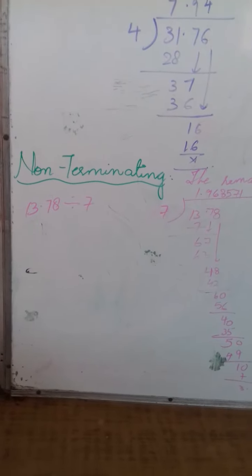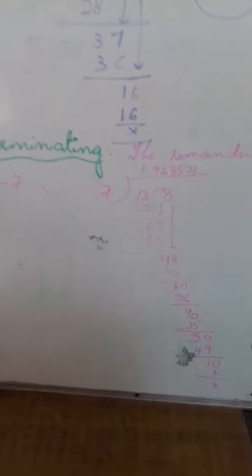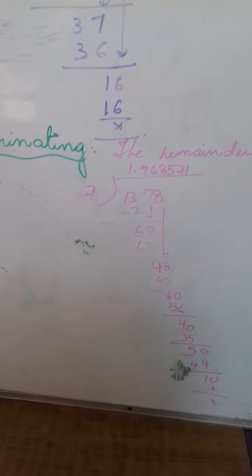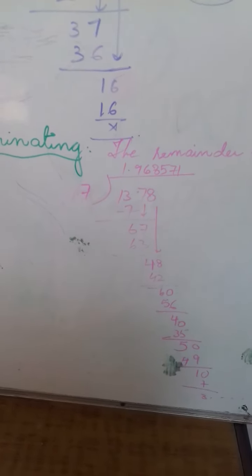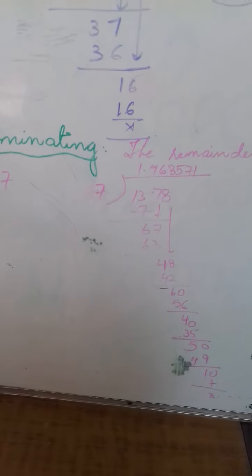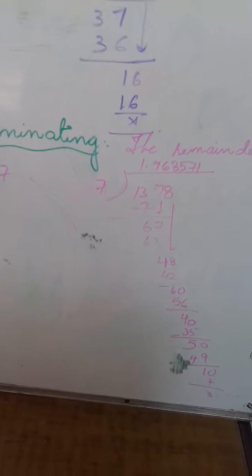Here I have taken this example, 13.78 divided by 7. Now, divide children. 7 1s are 7, 6 is left. Then as we are crossing the decimal in the dividend, we will put the decimal in the quotient.